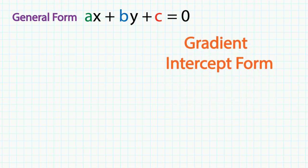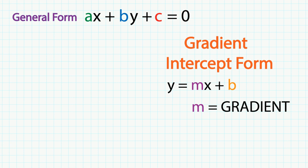Gradient intercept form is in the form of y equals mx plus b. m, which is the coefficient of x, is what we call a gradient or slope and it measures how steep the line is.